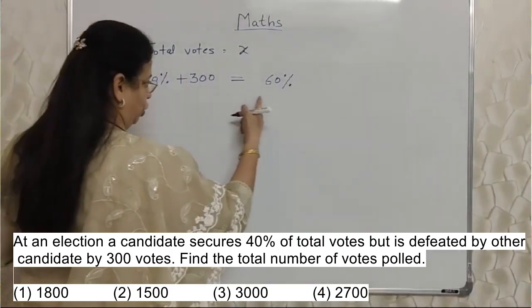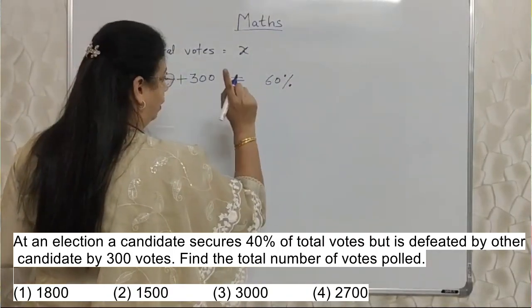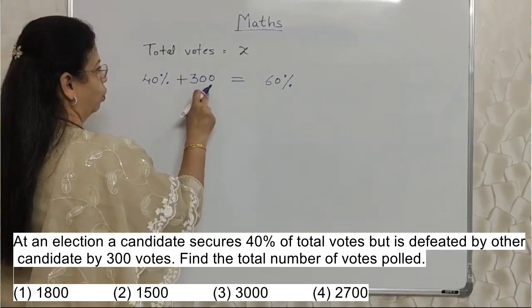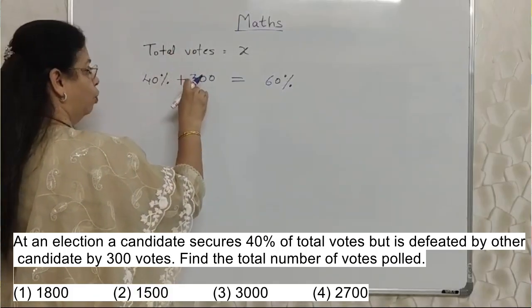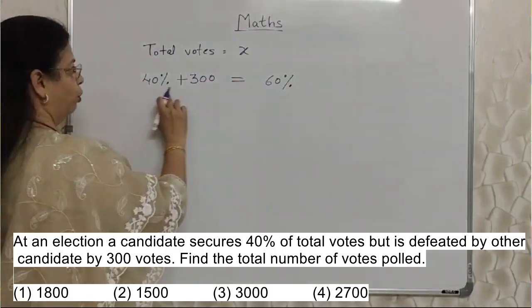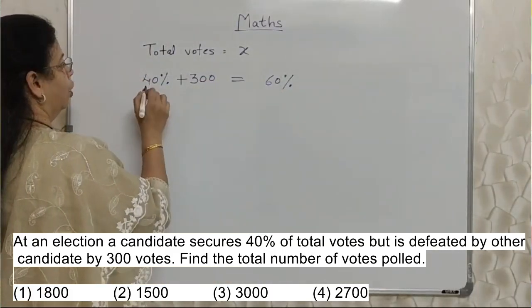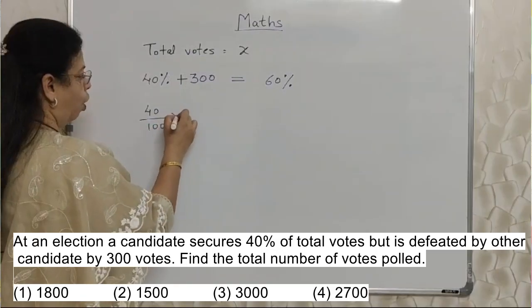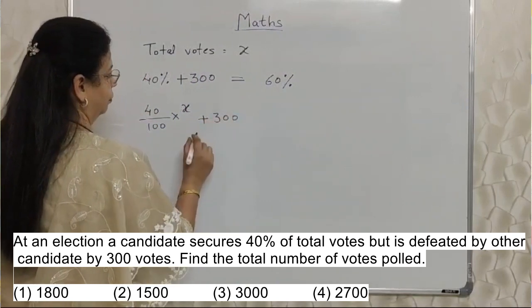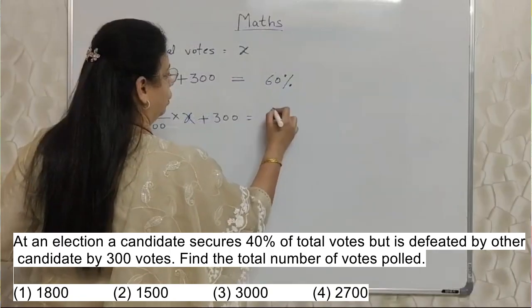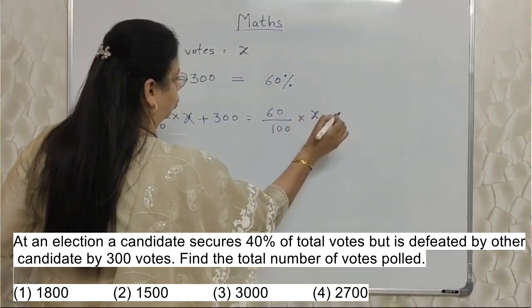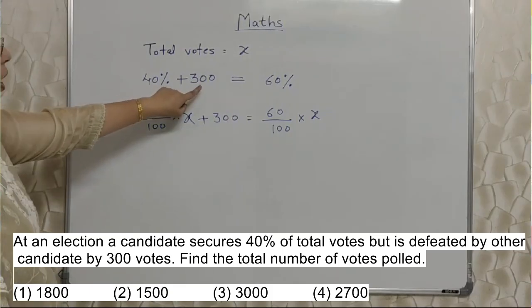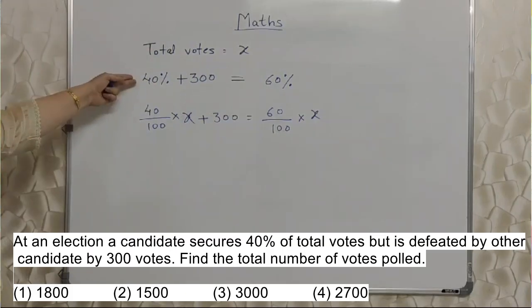Whatever they have given in English in the form of a question, we have written in the form of mathematics. Now, 40% of total votes means 40 upon 100 of x, plus 300, is equal to 60% of total votes. This is the equation. I hope you all have understood this — 40% plus 300 equals 60%.